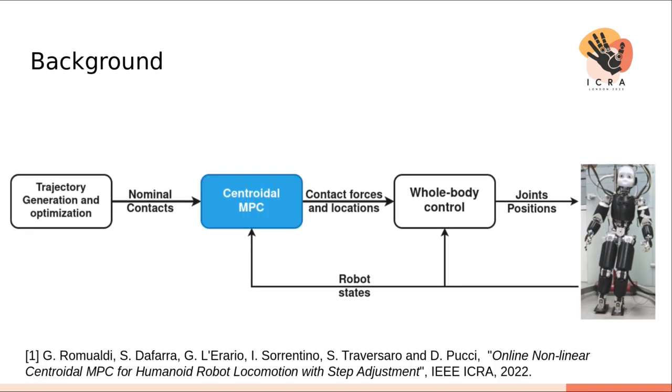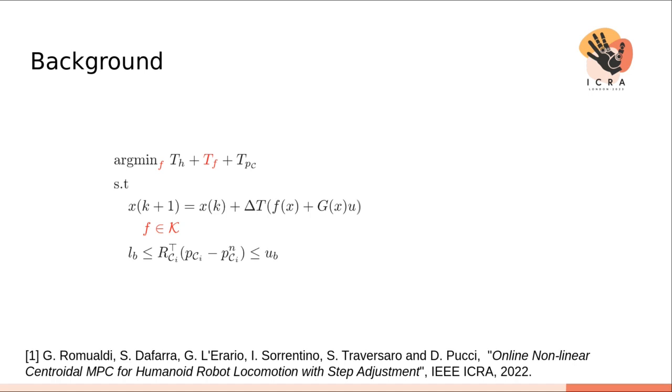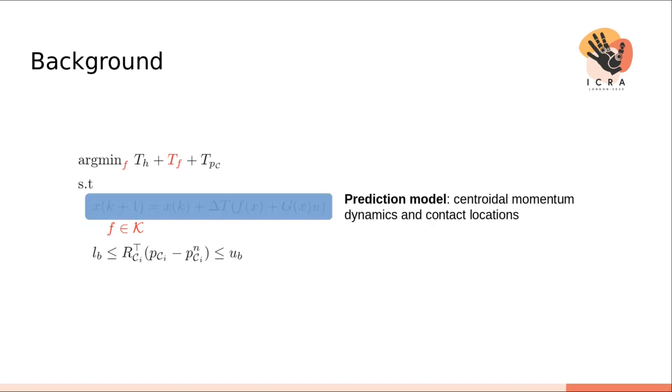In a previous work by one of my co-authors presented at the previous ICRA, the trajectory adjustment layer was reformulated as a centroidal MPC problem. The centroidal MPC problem uses as a prediction model the centroidal momentum dynamics and contact location dynamics.